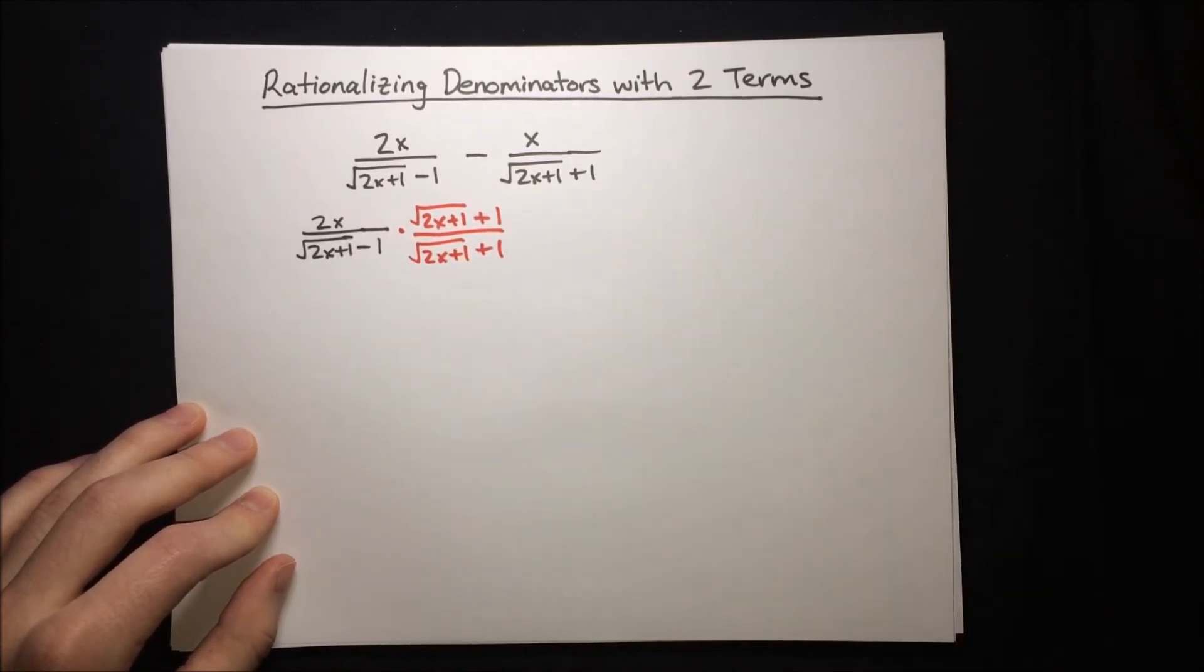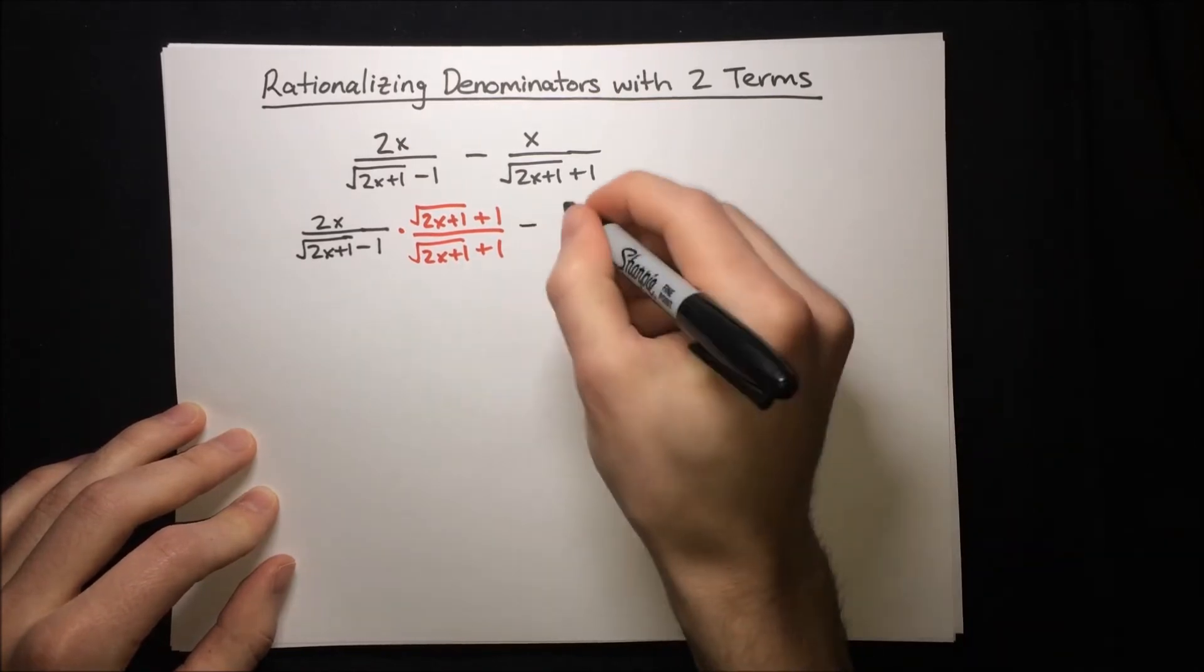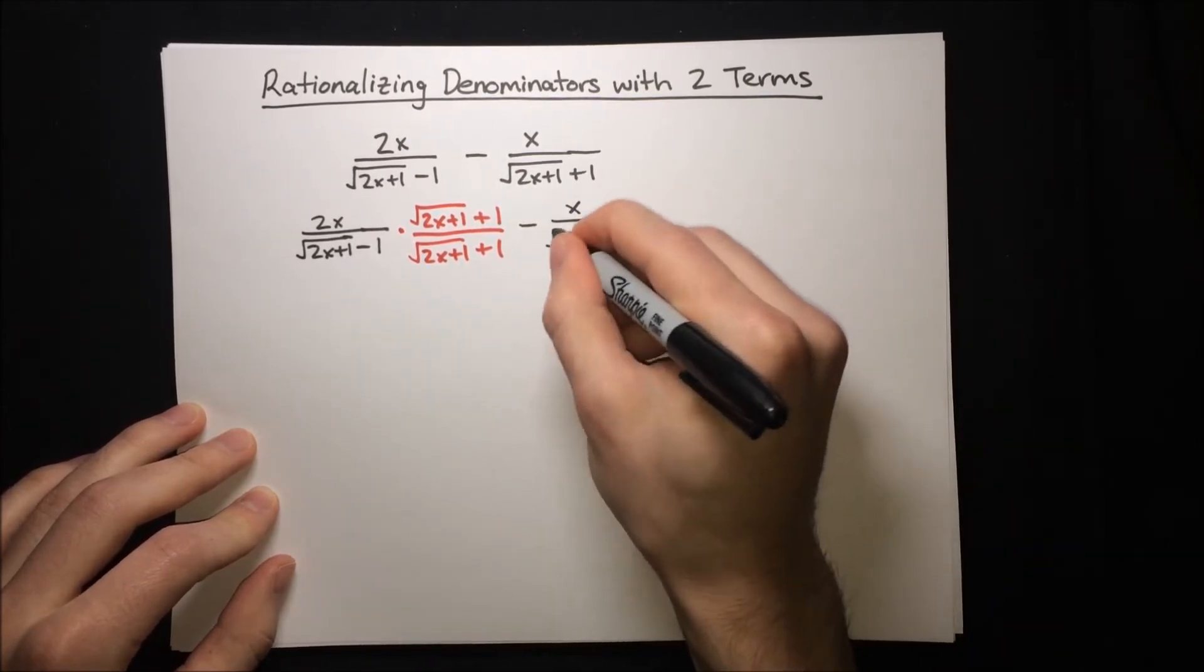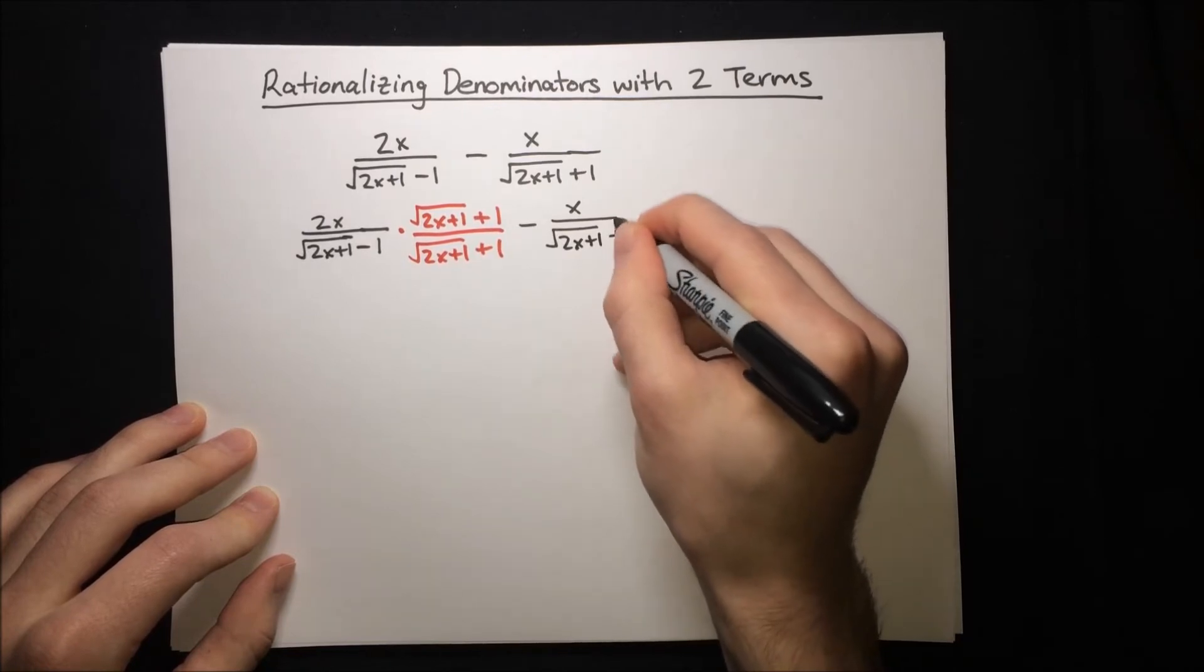And then for the other fraction, we'll also rewrite that: x over root 2x plus 1 plus 1.